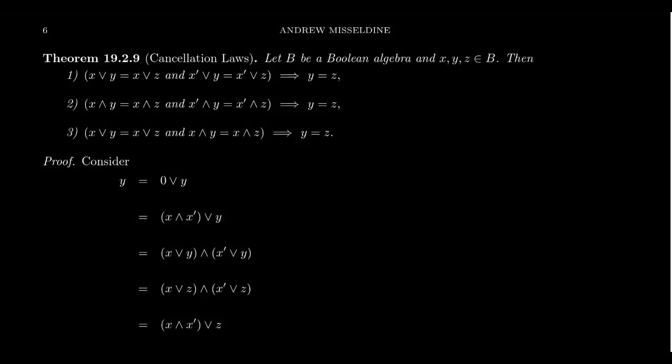In the previous video we defined the notion of a Boolean algebra. In this video I want to collect some properties about Boolean algebras. This discussion is going to mimic our previous discussions of properties of groups, rings, fields, vector spaces, and R-modules. Boolean algebras do have identities zero and one, and as we already mentioned when we talked about bounded lattices, these identities are necessarily unique.